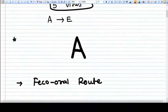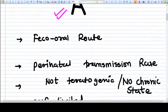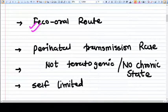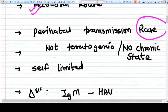Let's start from A. The hepatitis A virus is transmitted through the fecal-oral route. Perinatal transmission is rare with this type of hepatitis. It's also not teratogenic and there is no chronic state.